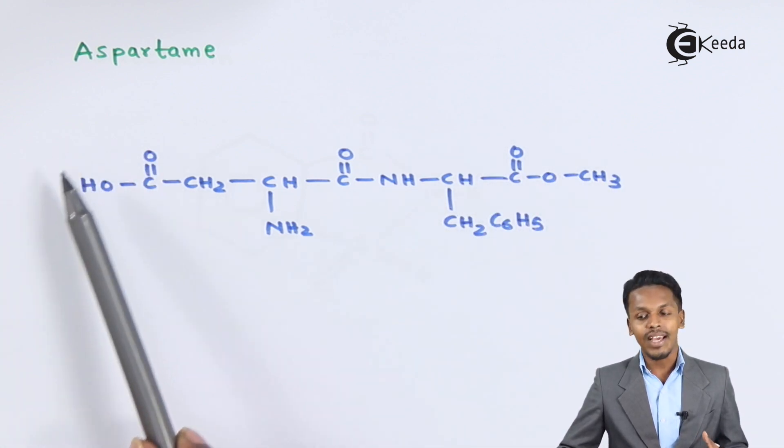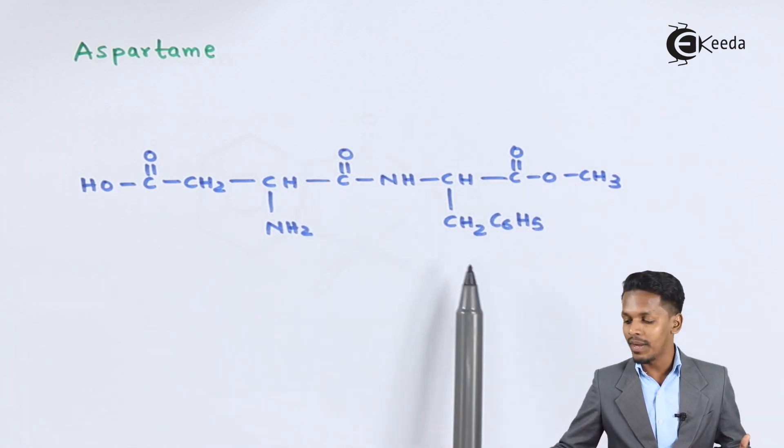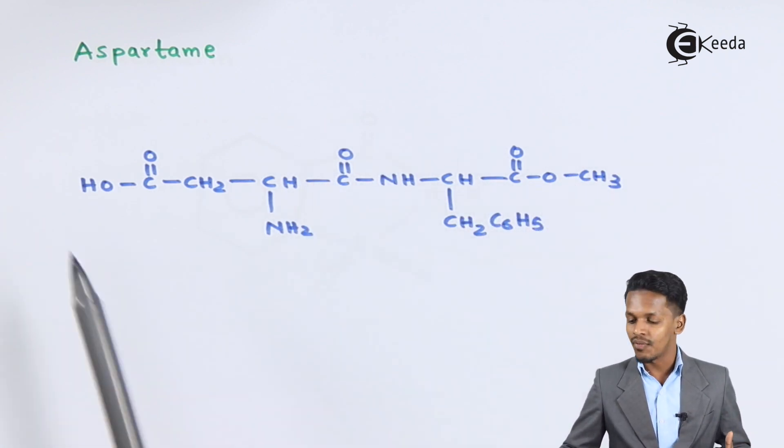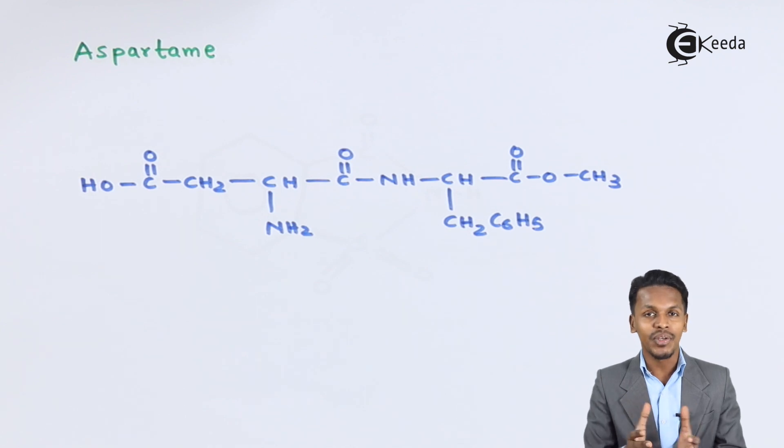The functional groups are not only carboxylic acid, it is also amide and also an ester group along with a phenyl group. This is aspartame. Aspartame is actually 100 times more sweeter compared to cane sugar. Now talking about the other artificial sweetener.